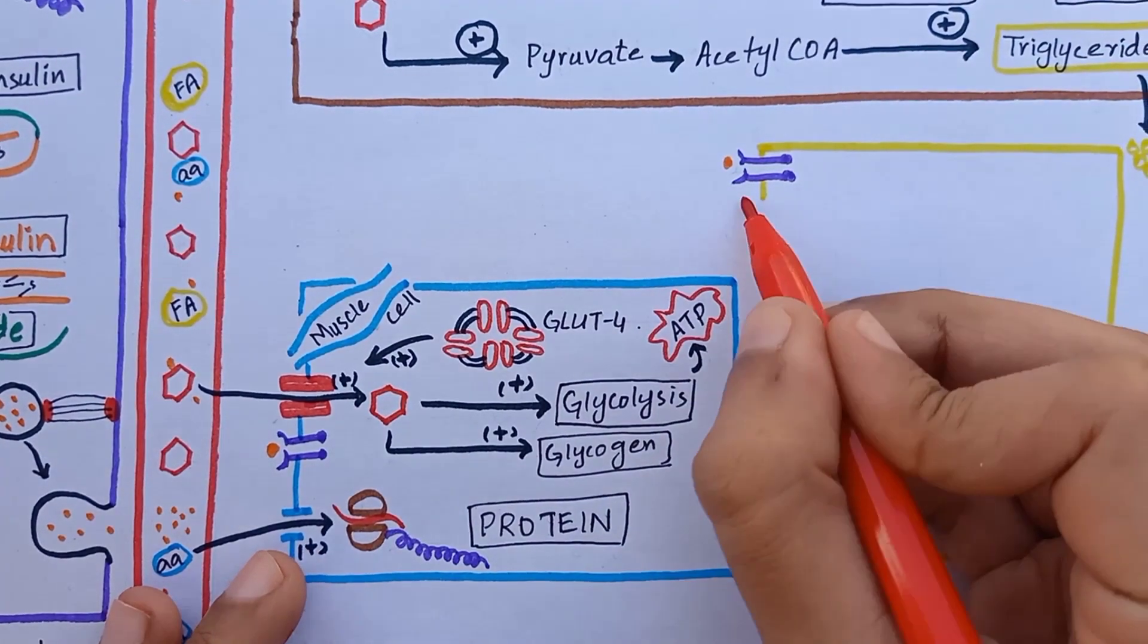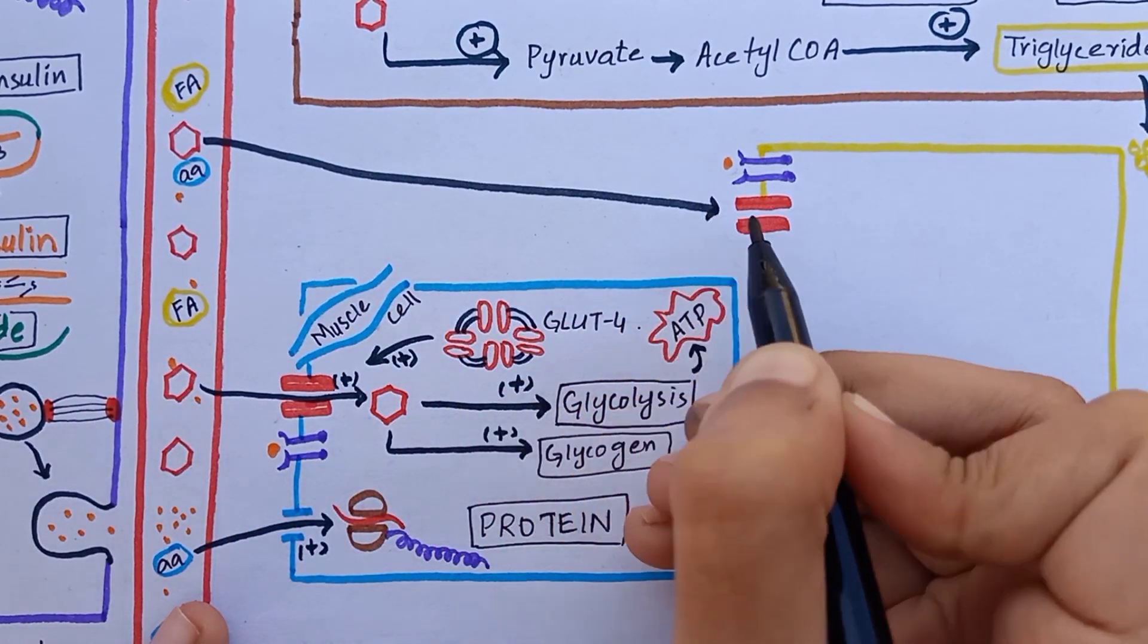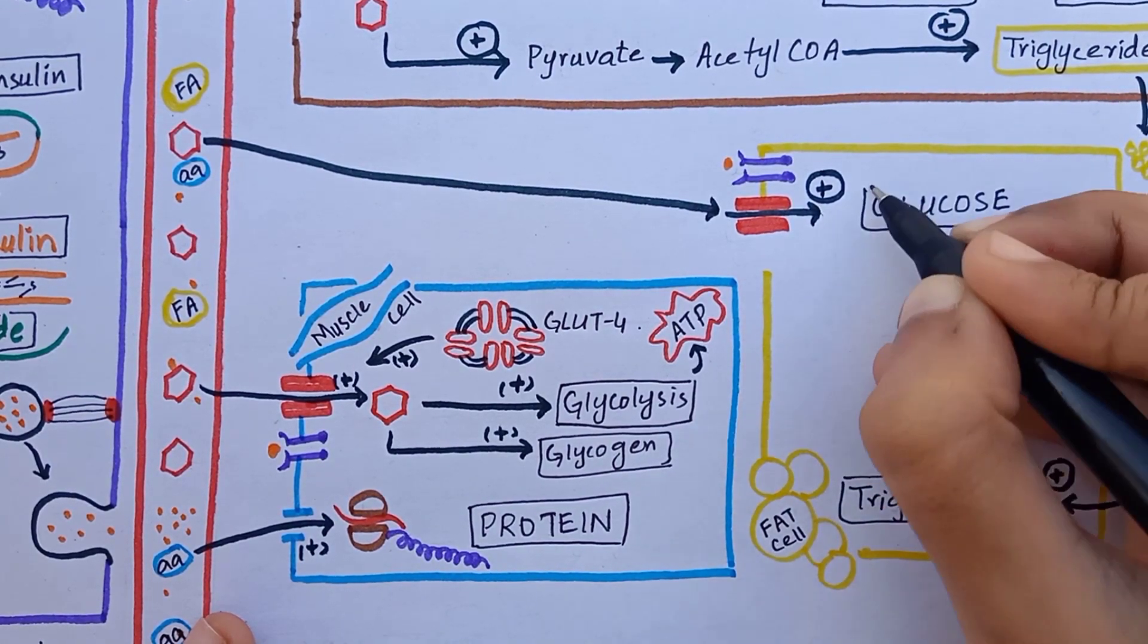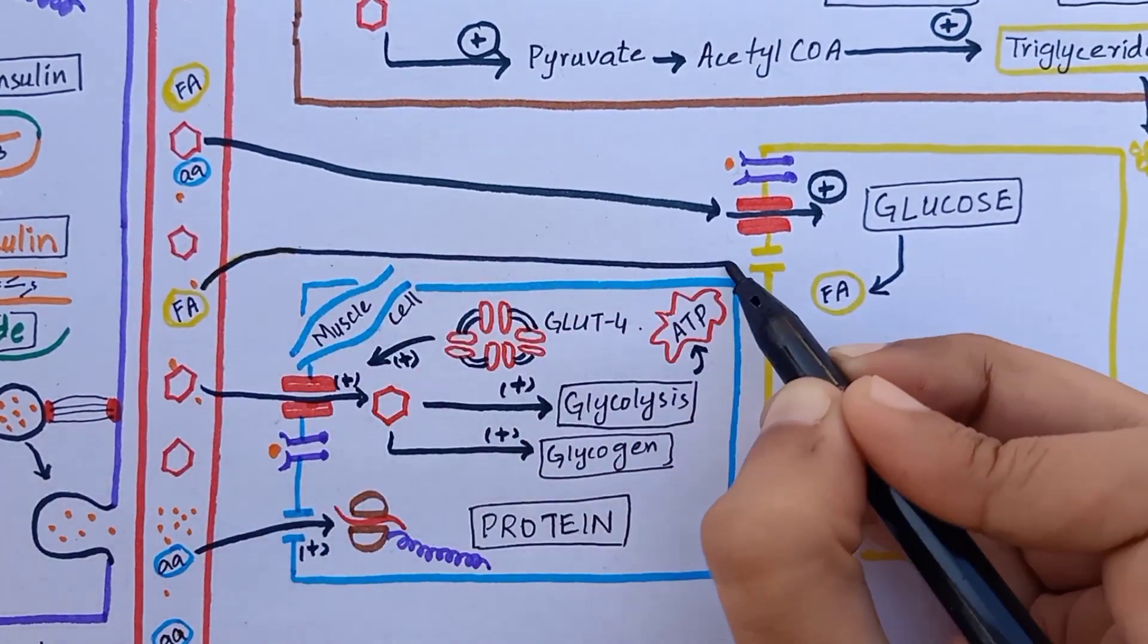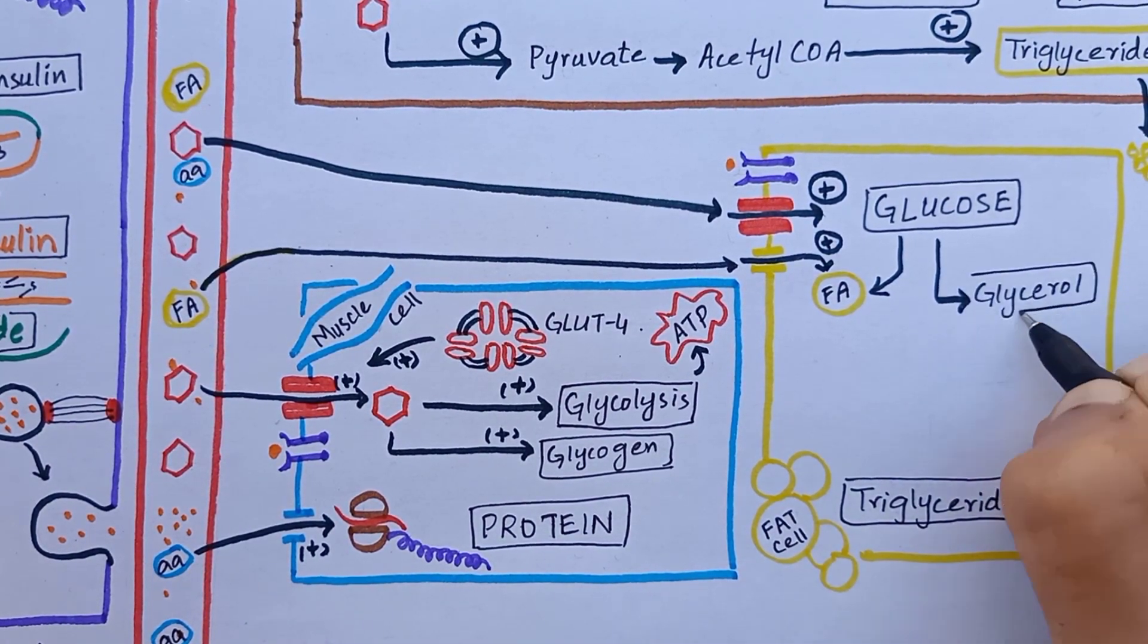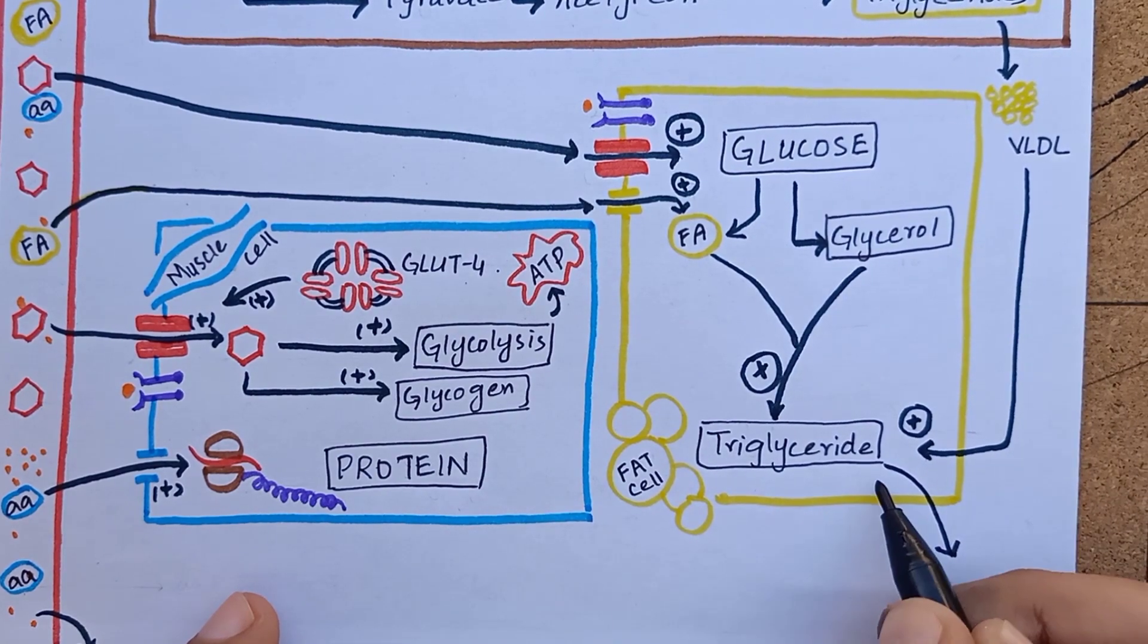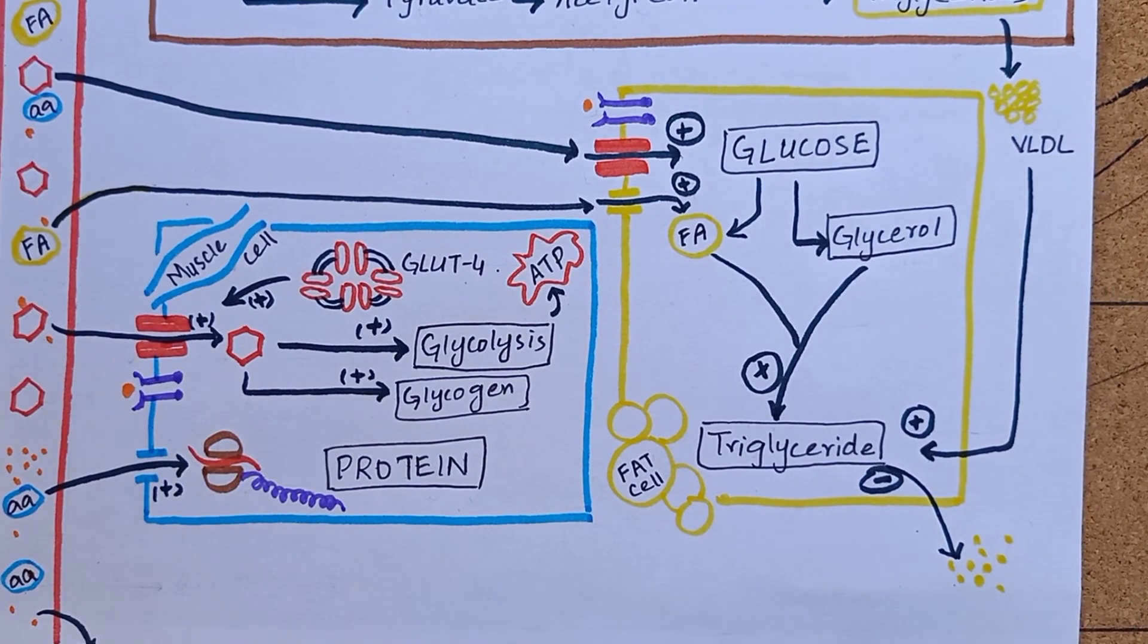In adipose tissues, there are GLUT4 transporters for glucose entry into the cell. Insulin promotes GLUT4 translocation in fat cells in the same way that it promotes glucose transport into the muscle cells. This glucose is used to synthesize minute amount of fatty acid, but most of the fatty acid is taken up by blood. Rest of glucose is converted into glycerol. Glycerol combines with fatty acid to form triglycerides. Insulin inhibits the action of hormone-sensitive lipase, that is the enzyme that causes hydrolysis of triglyceride into fatty acid.